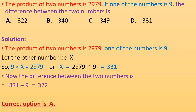The product of two numbers is 2979. If one of the numbers is 9, what is the difference between the two numbers? We have highlighted the given information and will solve step by step. The product of two numbers is 2979 and one of the numbers is 9. Let the other number be X. So, 9 × X = 2979, which gives X = 2979 ÷ 9 = 331. The difference between the two numbers is 331 − 9 = 322. Correct option is A.